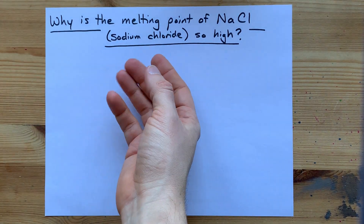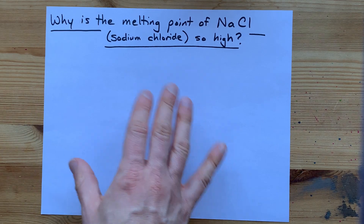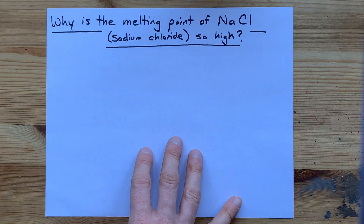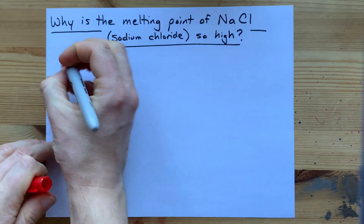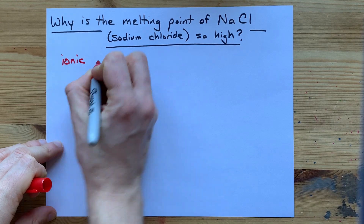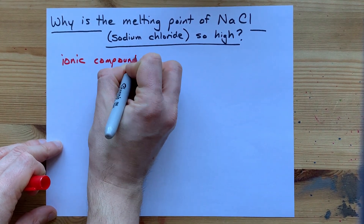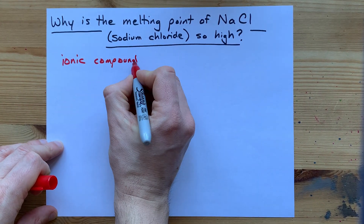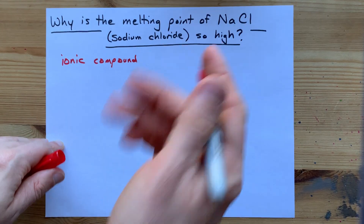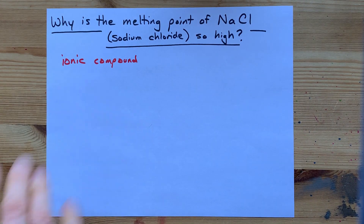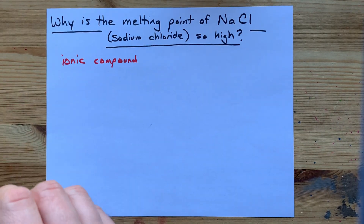Why is the melting point of NaCl, sodium chloride, or table salt, so high? The easy answer is that it is an ionic compound, and almost by definition, ionic compounds have high melting points. If you're here to find out why, I can tell you.